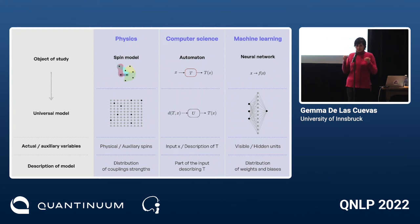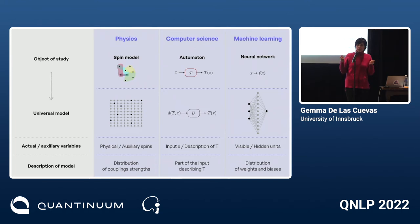I would like to understand how deep the similarities really are — I'd like to prove theorems and say one follows from the other, or one is weaker, or they are equivalent. So much is known about Turing machines, and the others are new. If we establish these rigorous links, we would be able to transfer a lot of knowledge and understanding.